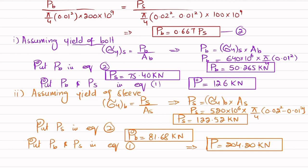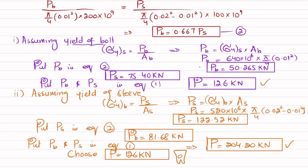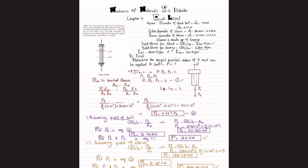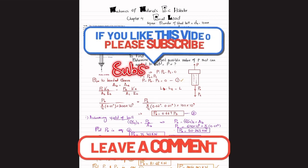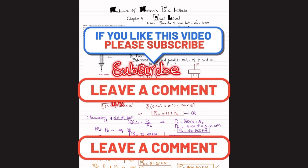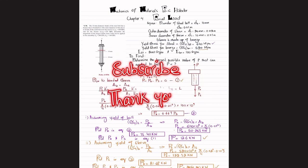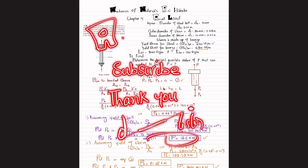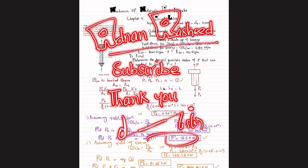We have two values of P: 126 kilonewton from bolt yielding and 204.20 kilonewton from sleeve yielding. We choose the safer, smaller value: P equals 126 kilonewton is the largest elastic load that can be applied to this assembly. That concludes problem 4-96. I hope you enjoyed and learned from this video. If you are new, please subscribe and hit the bell icon. You can ask questions in the comment section and share the videos with your friends.